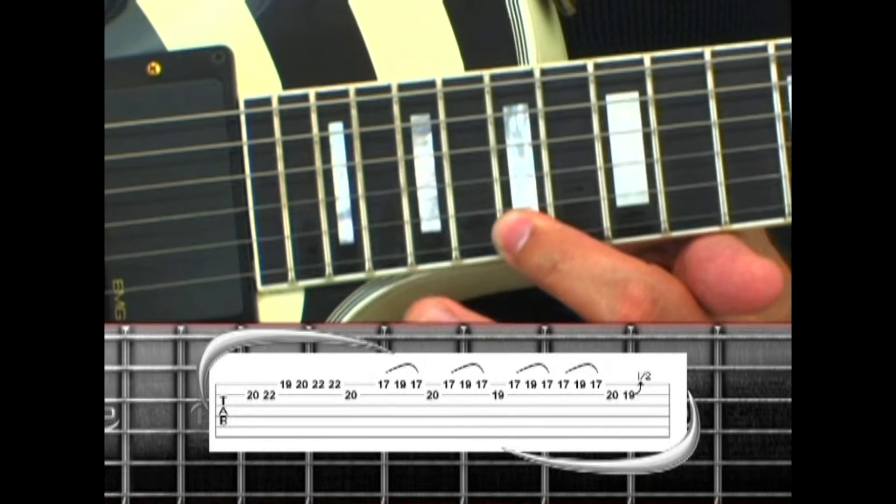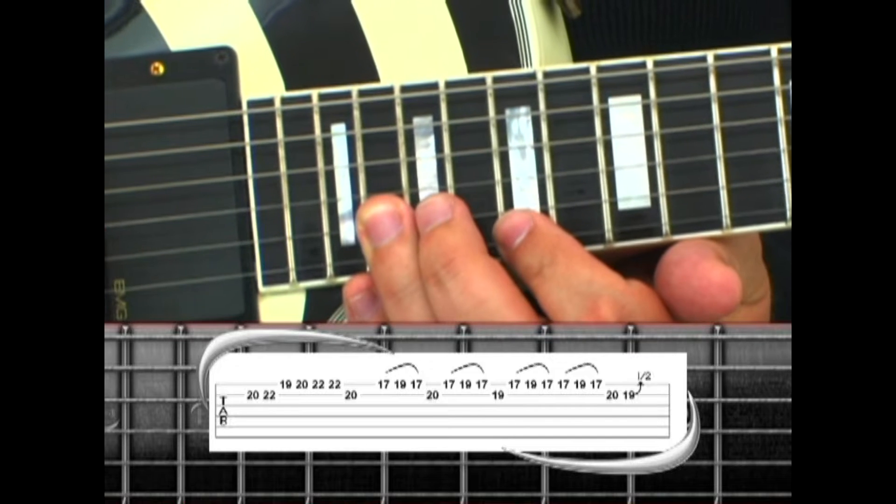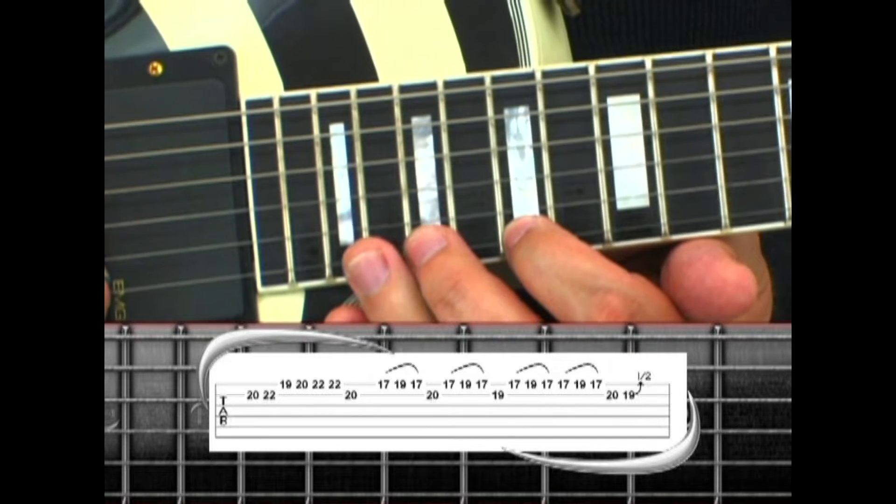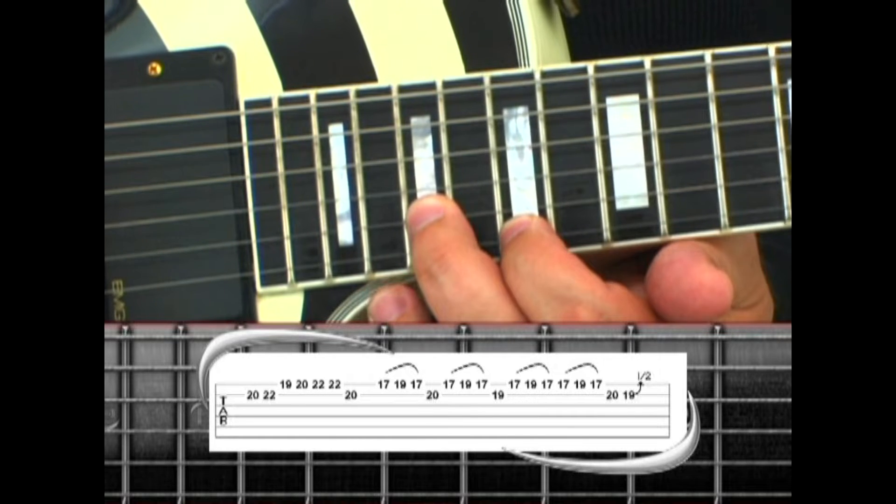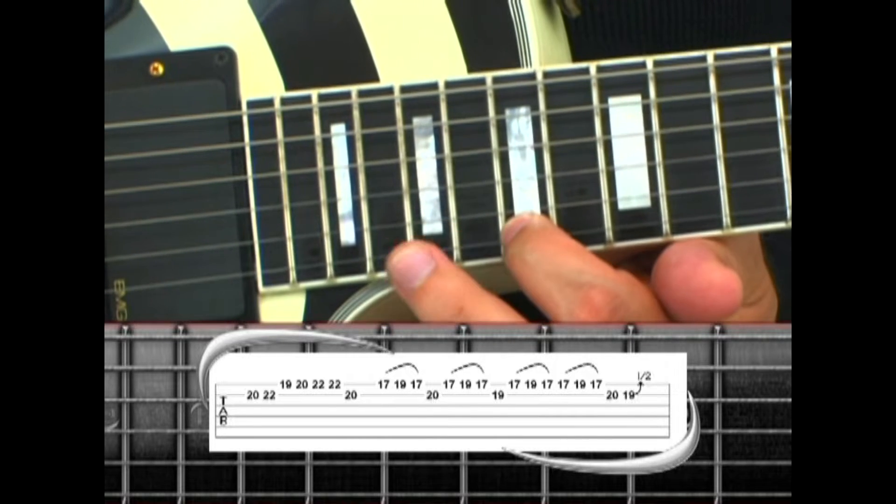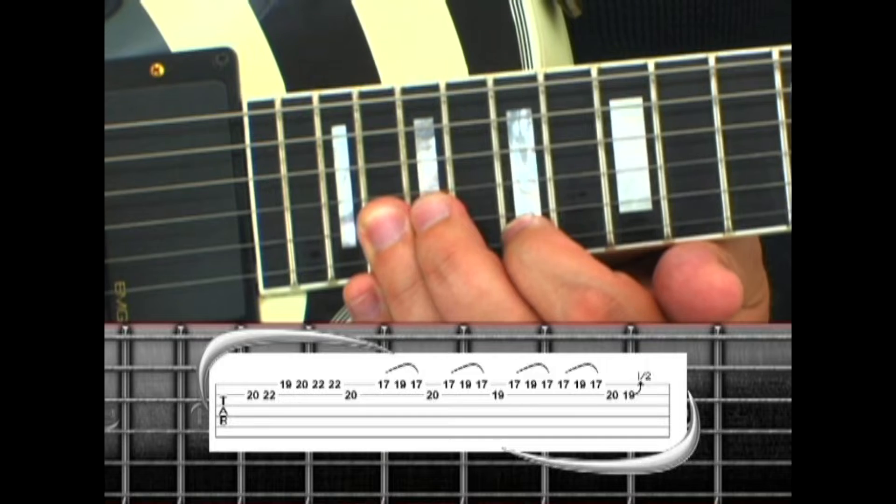19, 17 to 20, again to 19, twice, then to 20, 19 with a bend.